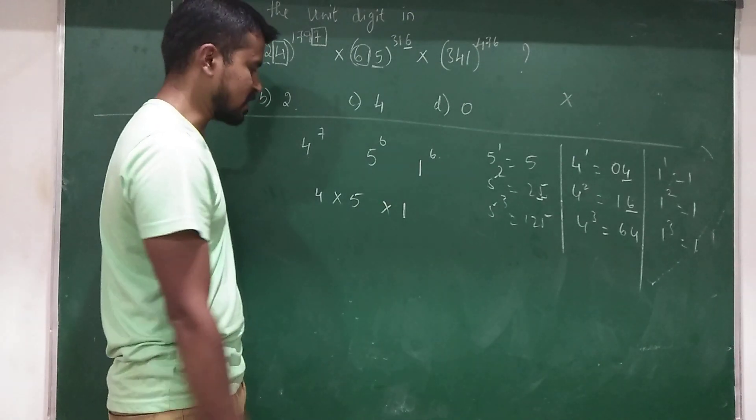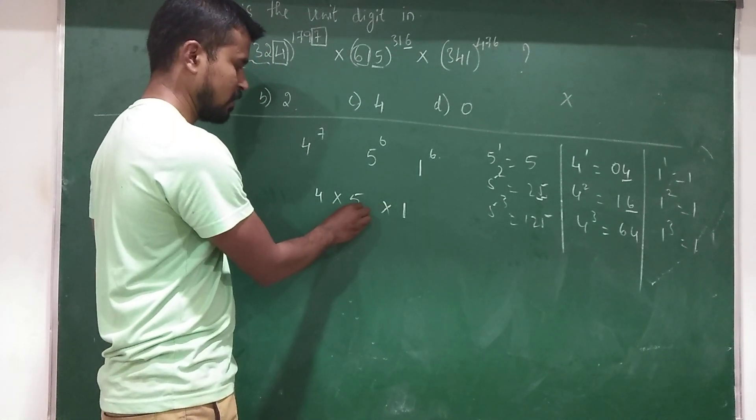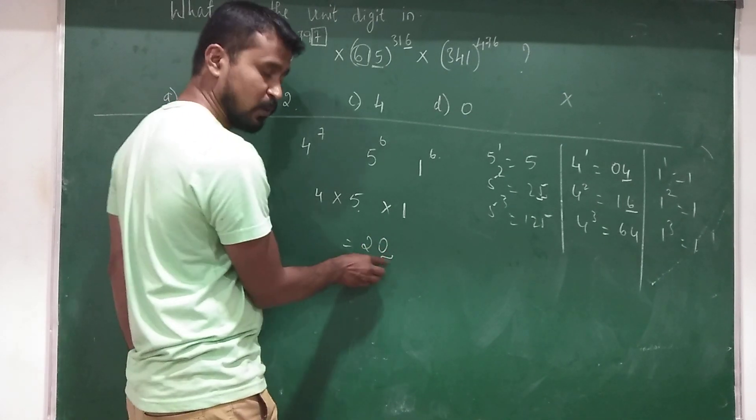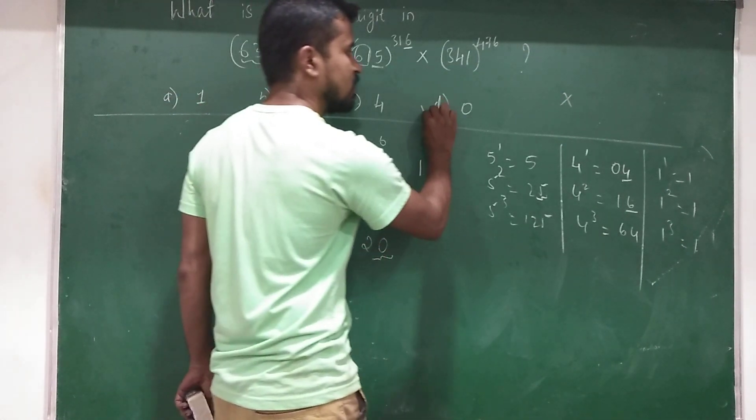Now I will multiply these unit places: 4 times 0, 0 times 1. Therefore, the resultant answer's unit digit will be 0.